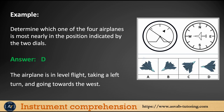Next example: determine which of the four airplanes is most nearly in the position indicated by the two dials. The aircraft is in level flight — you can see the level flight indication. It is taking a left turn because the index is on the right side, and it is going towards the West.